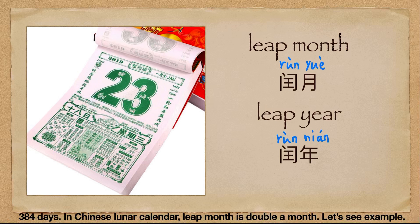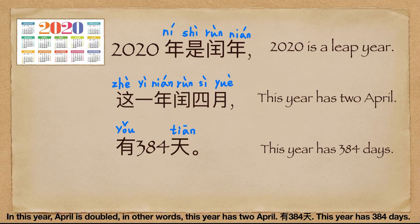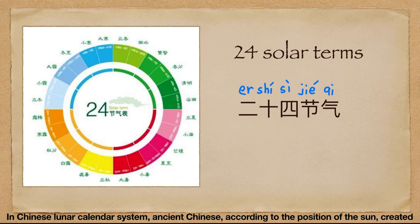In the Chinese lunar calendar, a leap month means a month is doubled. For example, 2020 is a leap year. 这一年，闰四月 — 闰 here is a verb. This sentence means in this year, April is doubled. In other words, this year has 2 Aprils. 有384天 — this year has 384 days.